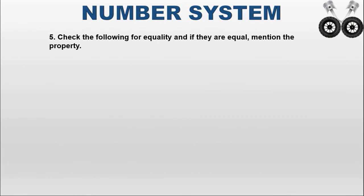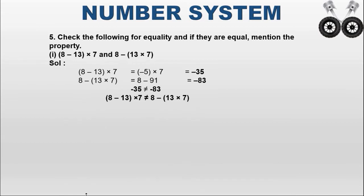Fifth question: check the following for equality and mention the property. First pair: 8 × (−13) × 7 versus 8 × (−13 × 7). For the first, execute the bracket first: 8 minus 13. Different signs, so subtract: 13 minus 8 equals 5, and since 13 is bigger and negative, the result is minus 5. Then minus 5 into 7: different signs, so minus 35.